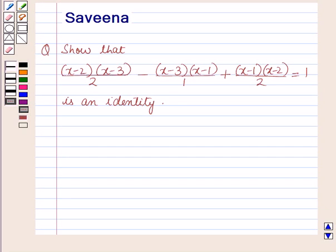Hello and welcome to the session. In this session we will discuss a question which says: show that (x−2)(x−3)/2 − (x−3)(x−1)/1 + (x−1)(x−2)/2 is equal to 1 is an identity.